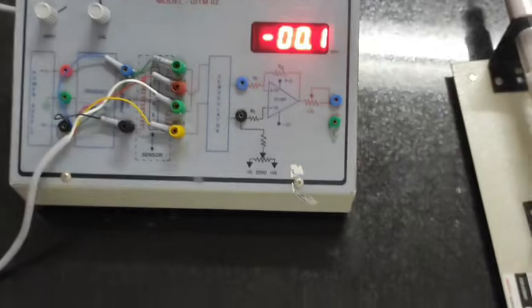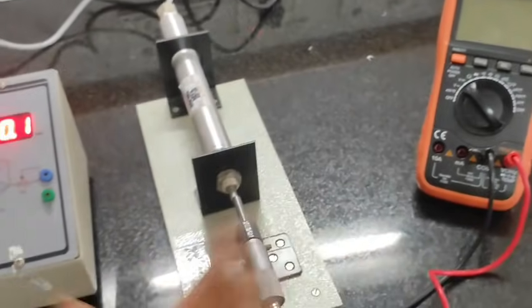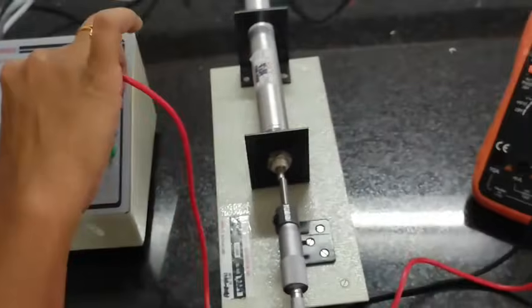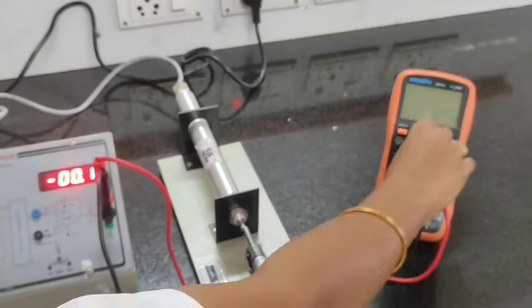Switching on the circuit, and we are connecting the multimeter for measuring the output voltage. We are choosing voltage in the multimeter.